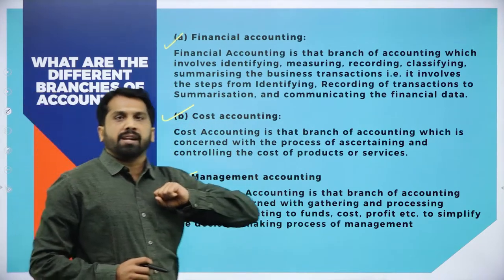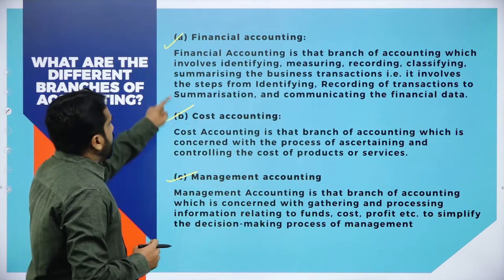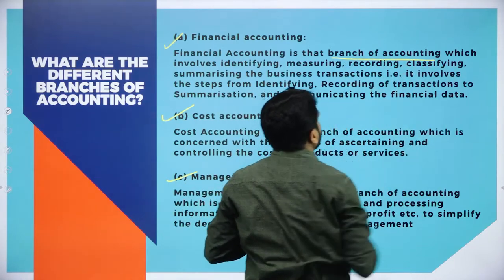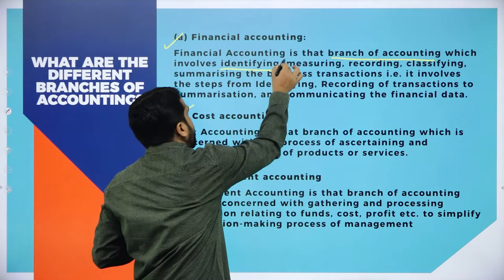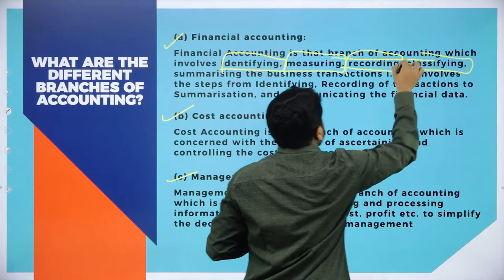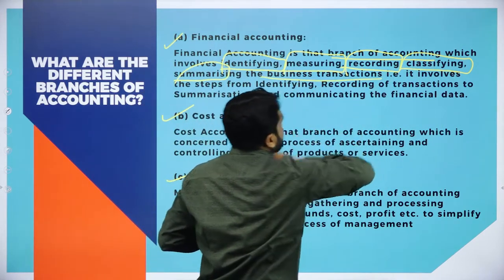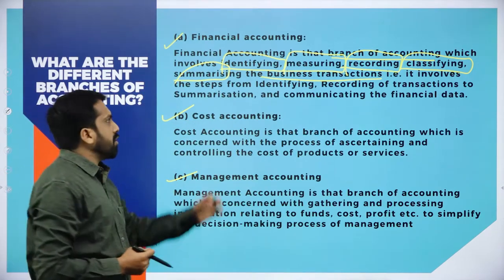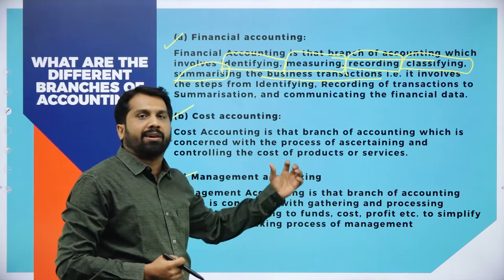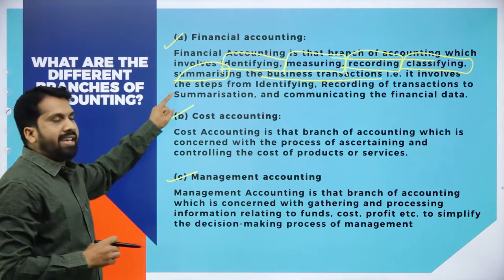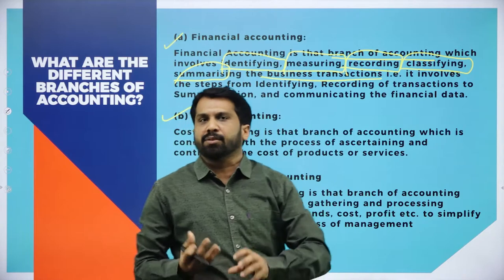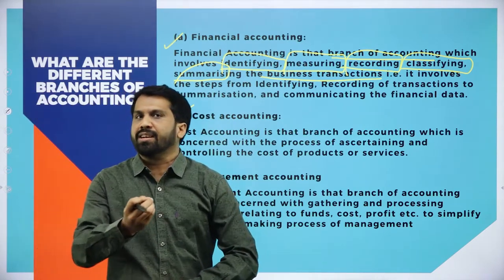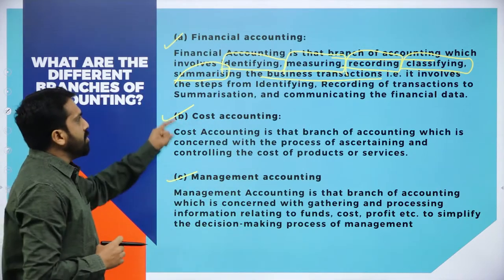What is financial accounting? Financial accounting is that branch of accounting which involves identifying, measuring, recording, classifying, and summarizing business transactions. Whatever we identify, measure, record, classify, and summarize — everything is included in financial accounting. In our day-to-day business, whatever numbers and calculations we do, that is nothing but financial accounting. If you want to find out whether you are running under profit or loss, you need financial accounting.